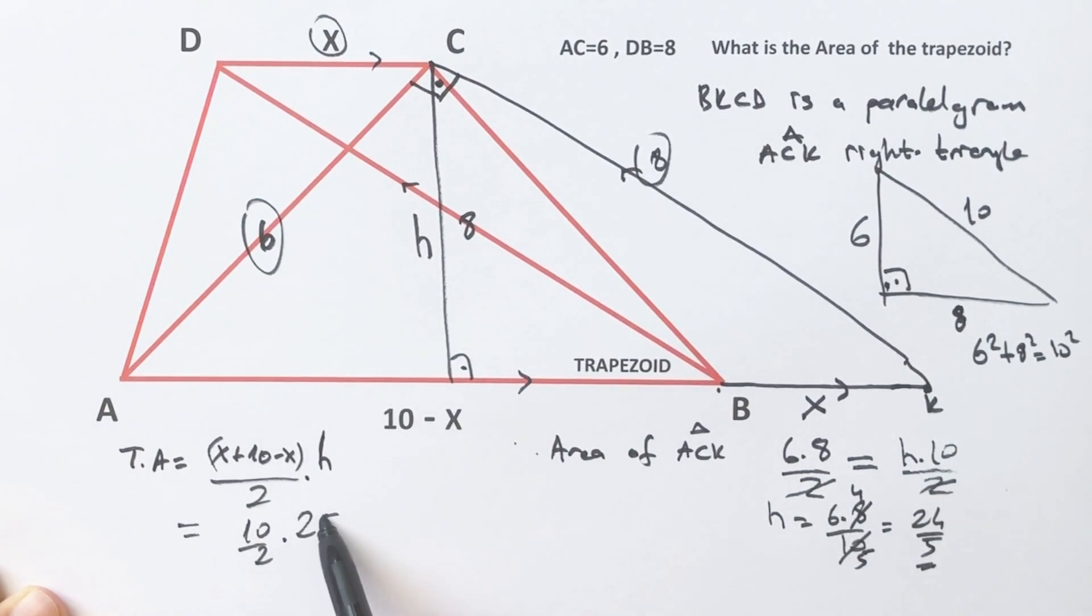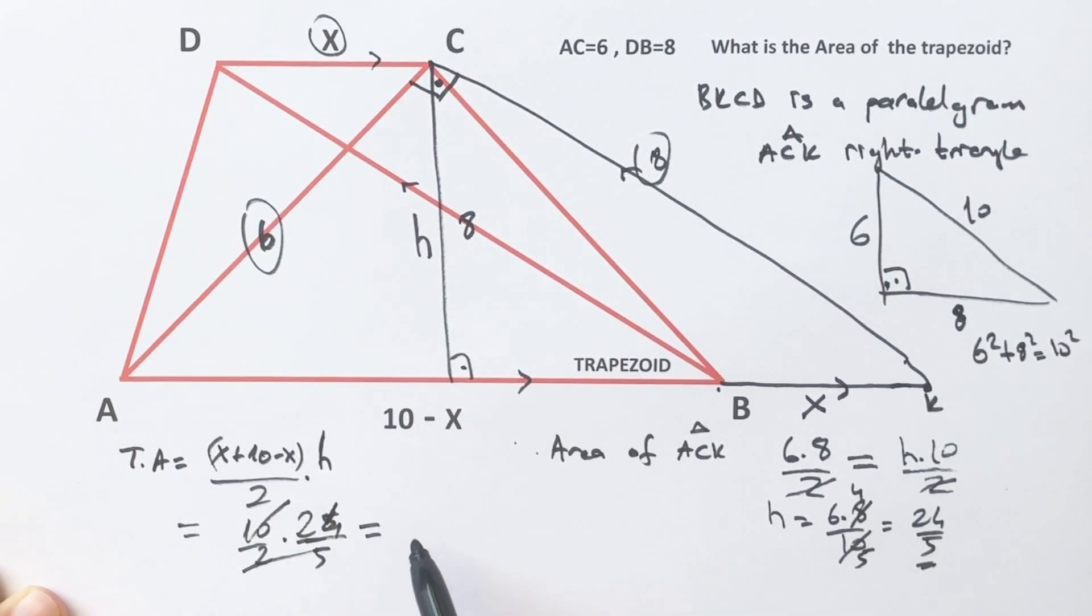Since h equals 24 over 5, the trapezoid area equals 5 times 24 over 5, which is 24 units squared.